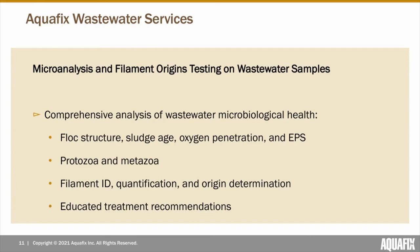This allows us to recommend treatment that not only alleviates symptoms, but also treats the root cause as well. For our analysis, we start by looking at flock — specifically flock structure, sludge age, oxygen penetration, and extracellular polymeric substance levels. We then move on and quantify and identify the metazoa and protozoa, as well as filamentous bacteria. Through these observations, we're able to discern what may be happening in a plant, why it's happening, and provide educated treatment recommendations.